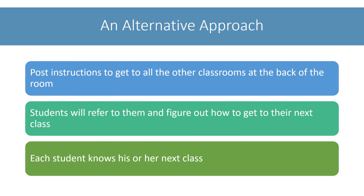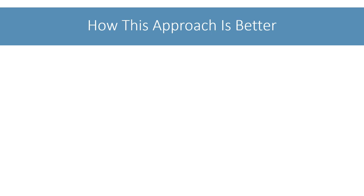A more practical approach for this problem can be that you will post instructions to get to all the other classrooms from your classroom at the back of the room. The attendees know which classroom they need to go to next. You will ask them to refer to the instructions and figure out how to get to their next class.